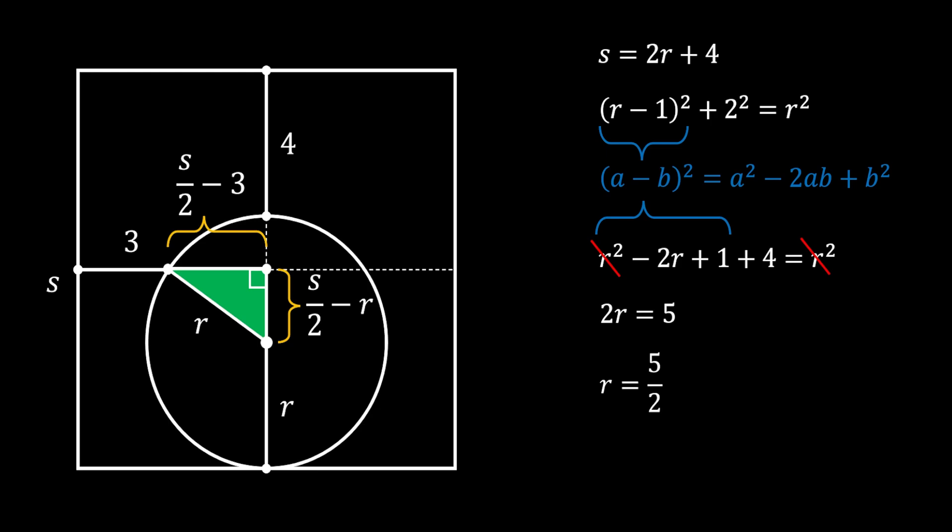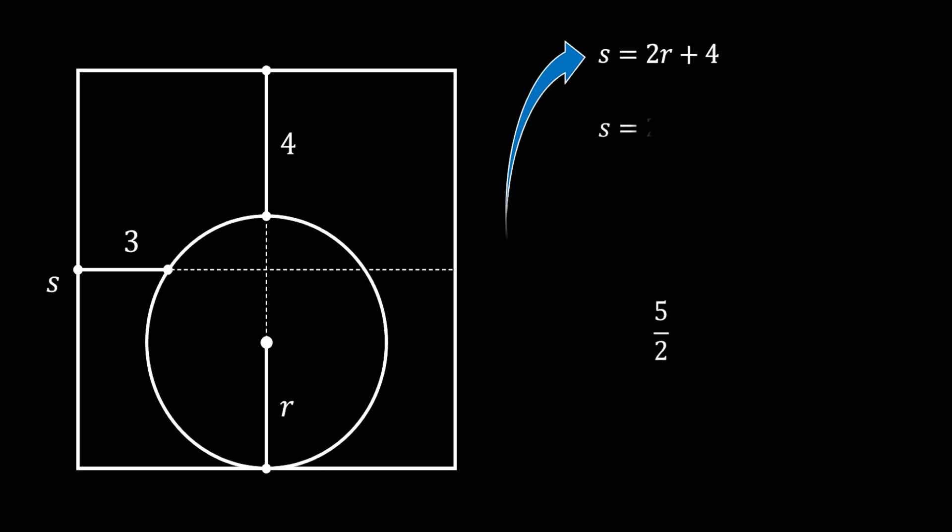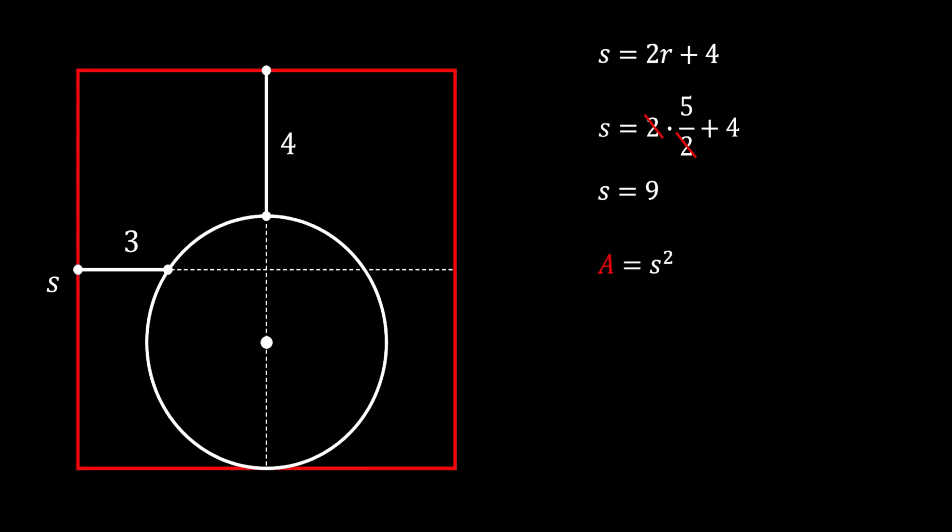Then, in order to get the side of our square, we are just going to substitute this value back into our first equation. And by doing so, we will get the following. Now we can simplify this and get that the side of our square is equal to 9. Now it's pretty simple to find the area of this square as the area is equal to the side squared. So we are substituting the value of S which is equal to 9 squared. And this means that the area of our red square is equal to 81 squared units. And this is our solution.